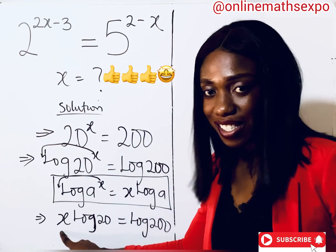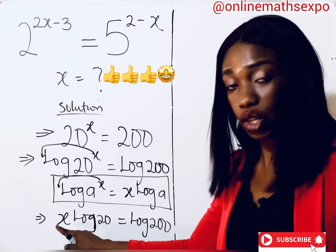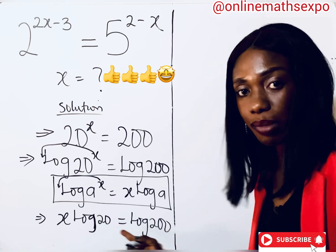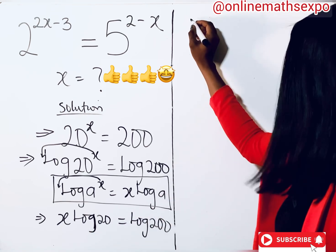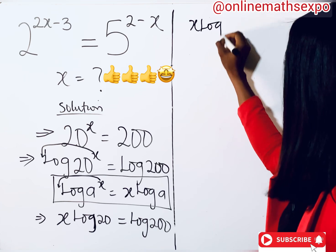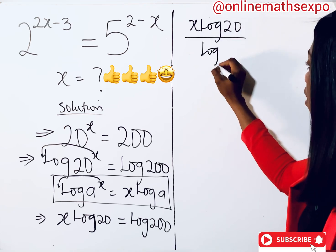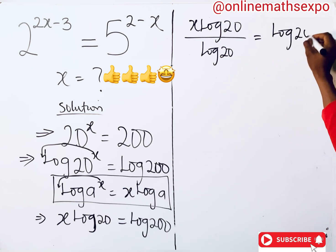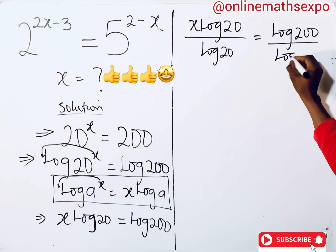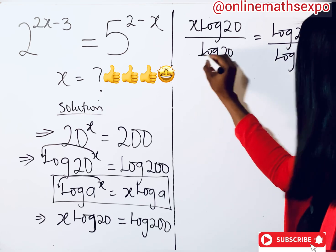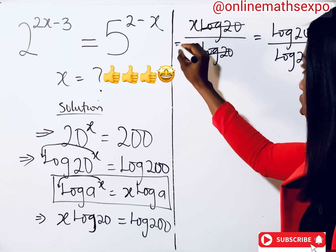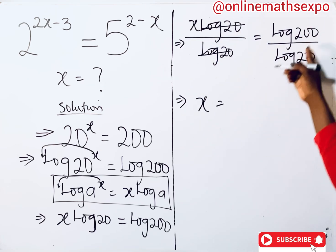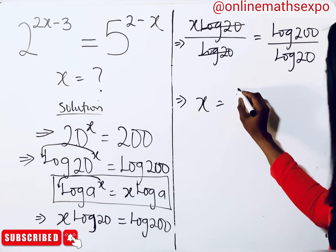Our target is to get x. Since log(20) is the coefficient, we divide both sides by log(20). This gives us x·log(20) over log(20) equal to log(200) over log(20). After cancelling, x equals log(200) divided by log(20).